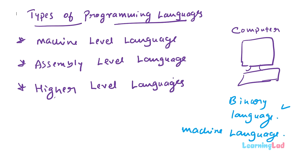Higher level languages are designed to be very easy for a beginner to learn and very close to human readable language. For example, to add 5 and 6 one could simply write '5 + 6', which is much more similar to human language. Just by looking at the code you can understand what it does. Since higher level languages were much easier to learn, many people started learning programming and creating many more programs.